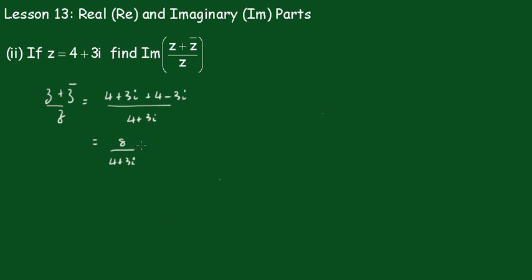We'll multiply by the conjugate, which is 4 minus 3i over 4 minus 3i.